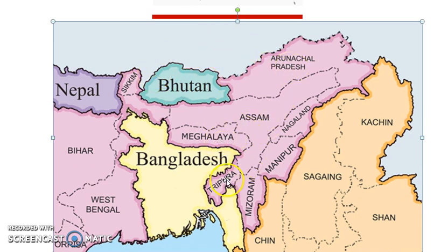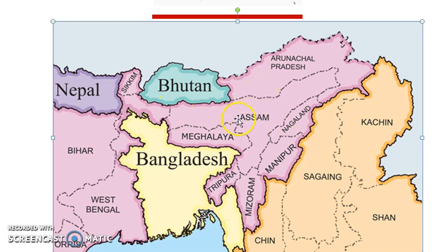The neighboring states of Assam include Meghalaya, Tripura, Mizoram, Manipur, and Nagaland. We are going to look at the state of Assam and its occupational area on this clear graph.